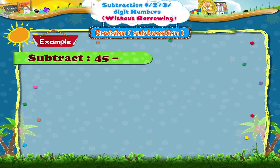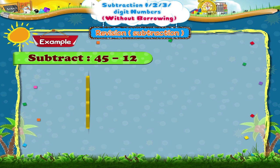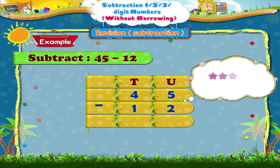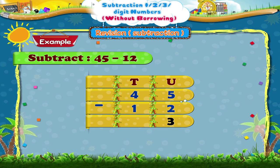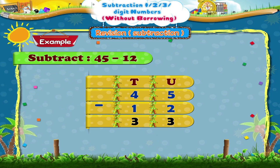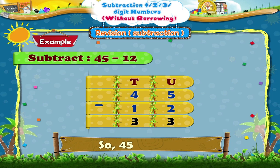45 minus 12. So you have subtracted 2 from 5 to get 3. And then you have subtracted 1 from 4. Now you get 3. So 45 minus 12 equals 33.